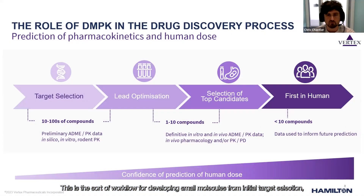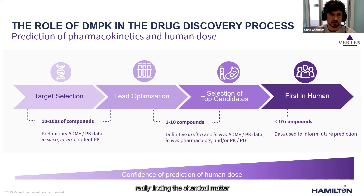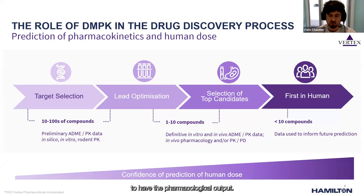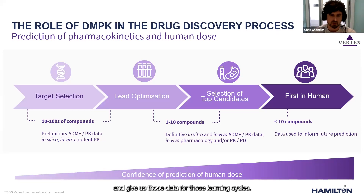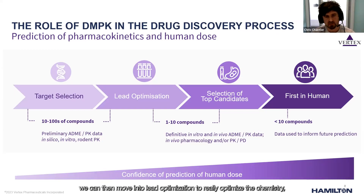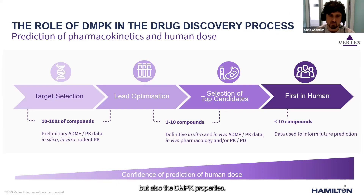This is the workflow for developing small molecules — from initial target selection, finding the chemical matter that will interact with our target of interest to produce the pharmacological output. At this early stage we have early-stage screening assays able to work in high throughput and give us data for those learning cycles. Once we have our chemical matter, we move into lead optimization to optimize the chemistry, covering both the pharmacological side and the ADMPK properties.